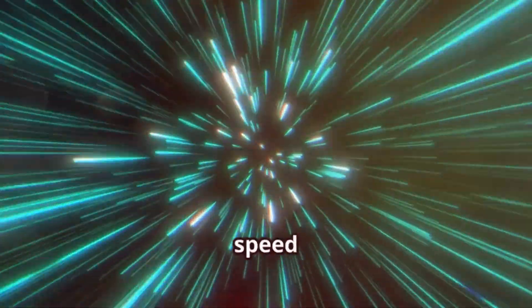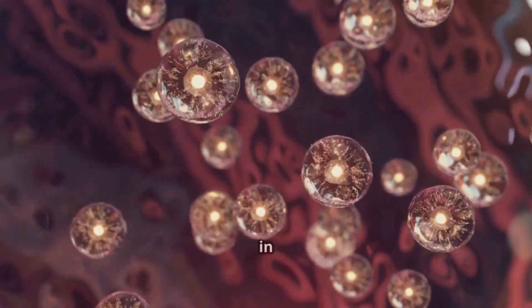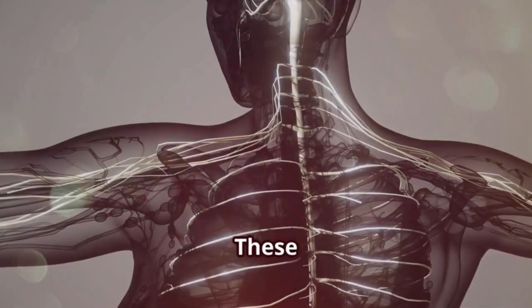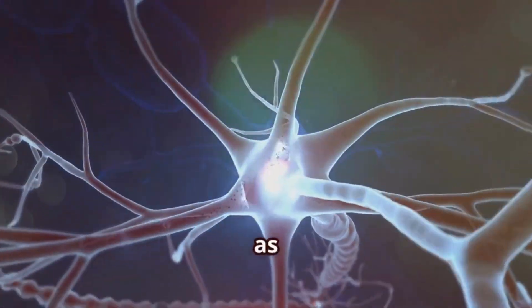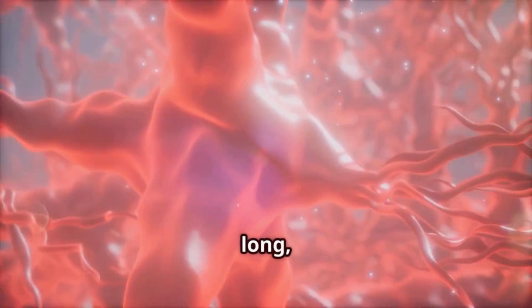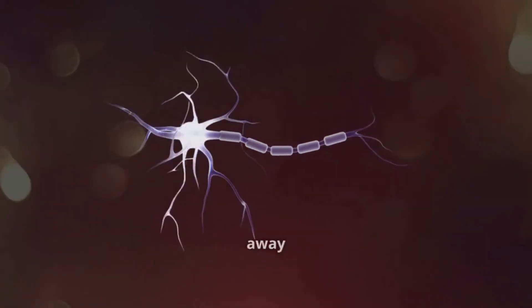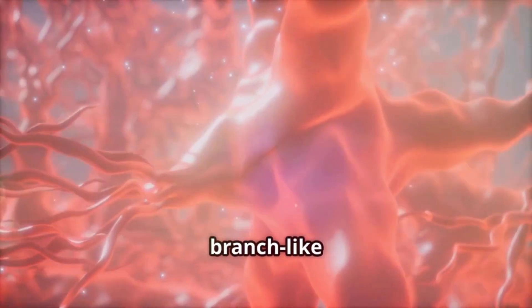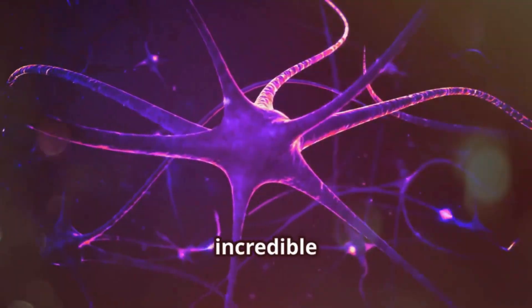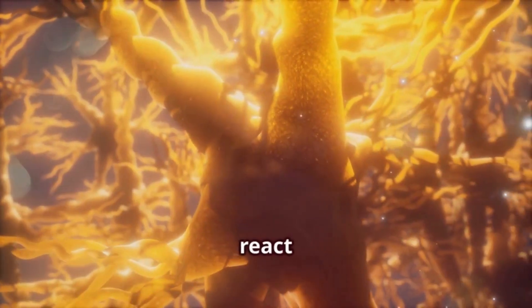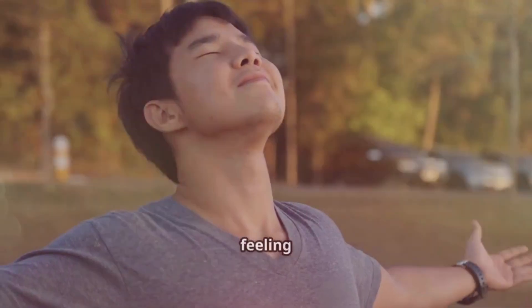Get ready for some serious speed, because we're about to meet the fastest cells in the body—nerve cells. These specialized cells are like the body's electrical grid, transmitting information as electrical signals. Nerve cells have long thread-like extensions called axons that carry signals away from the cell body, and branch-like dendrites that receive signals from other nerve cells. These signals travel at incredible speeds, allowing you to react to things around you in a flash. From feeling a gentle breeze to solving complex math problems, we've got our nerve cells to thank.